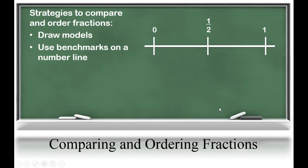Students can also compare numbers to benchmarks on a number line to help them compare and order fractions. The benchmarks for fractions are zero, one-half, and one whole. Let's do an example: we're comparing two-thirds and five-twelfths. Two-thirds is greater than one-half, so it goes to the right of one-half. Five-twelfths — well, I know six is one-half of twelve, so five-twelfths is less than one-half. I can look at my number line to see that two-thirds is greater than five-twelfths.